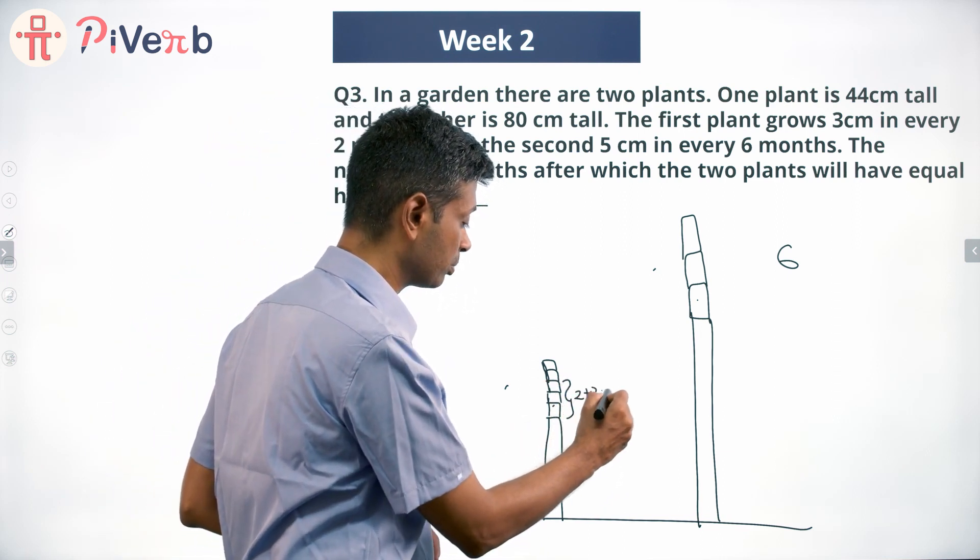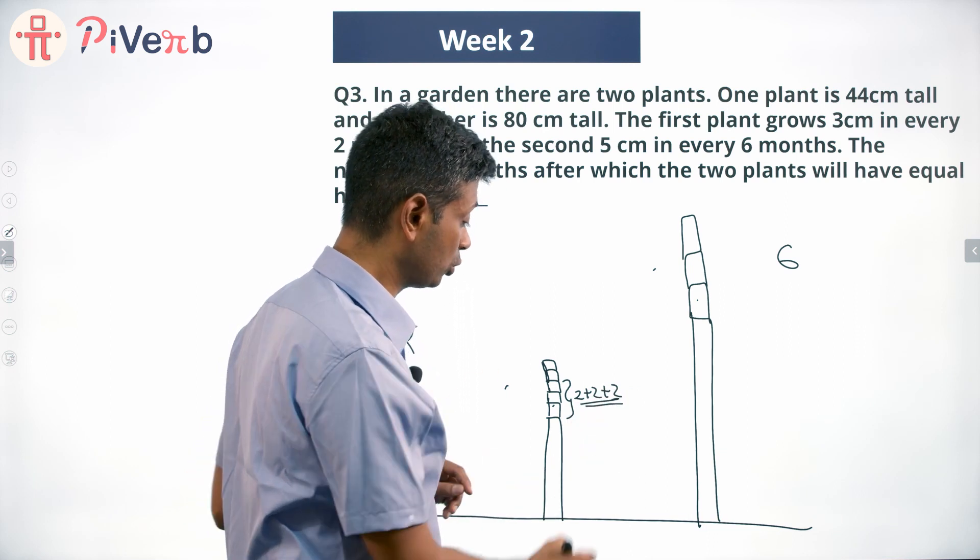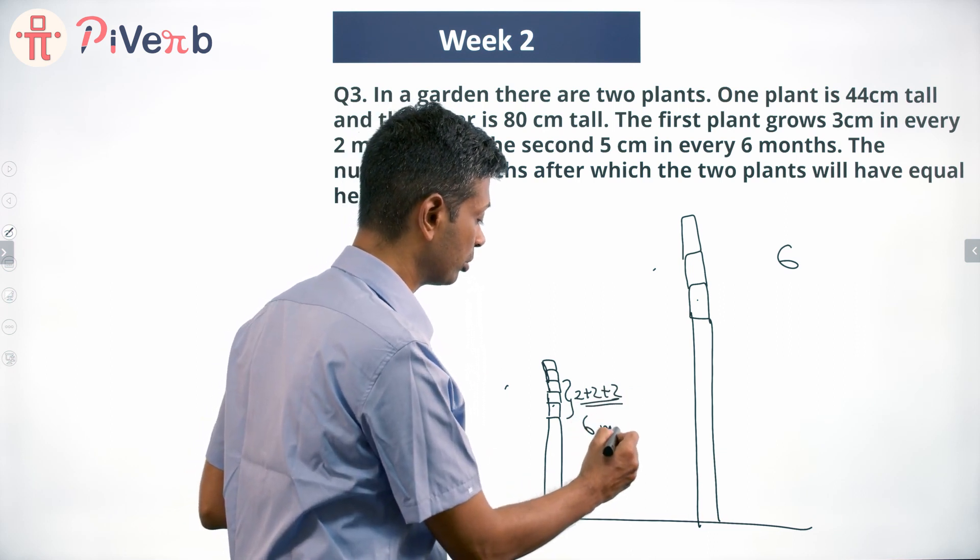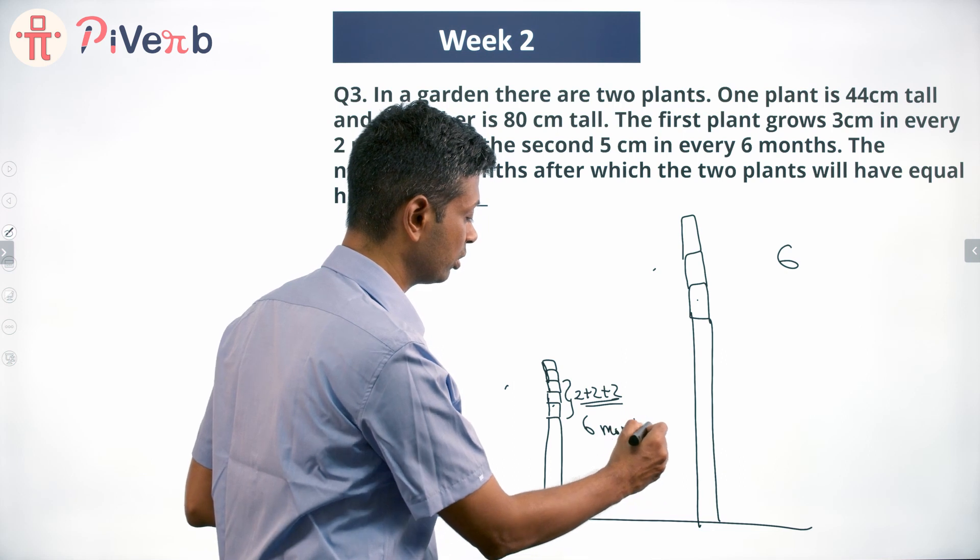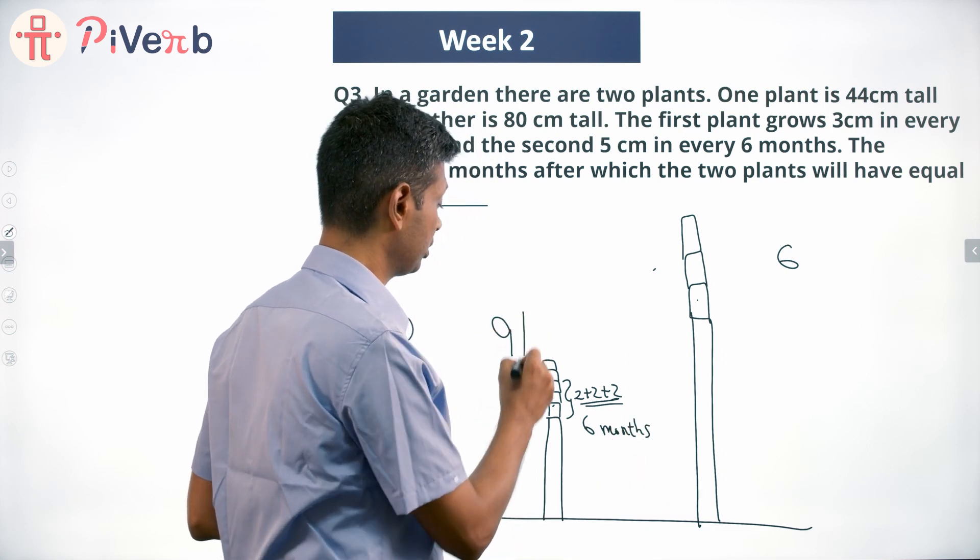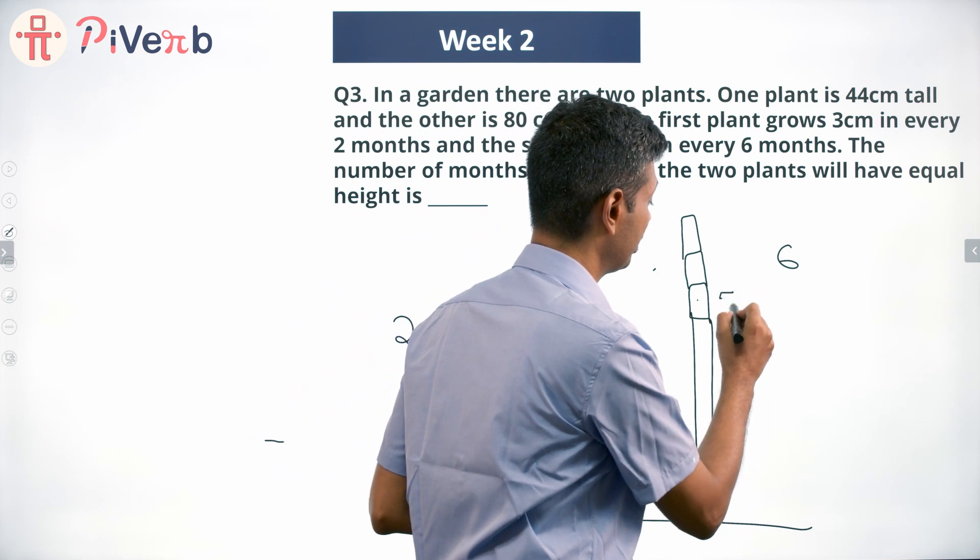3 sets of 2 months will account for 6 months. So in 6 months, what happens? This grows 9 centimeters whereas this grows only 5 centimeters.